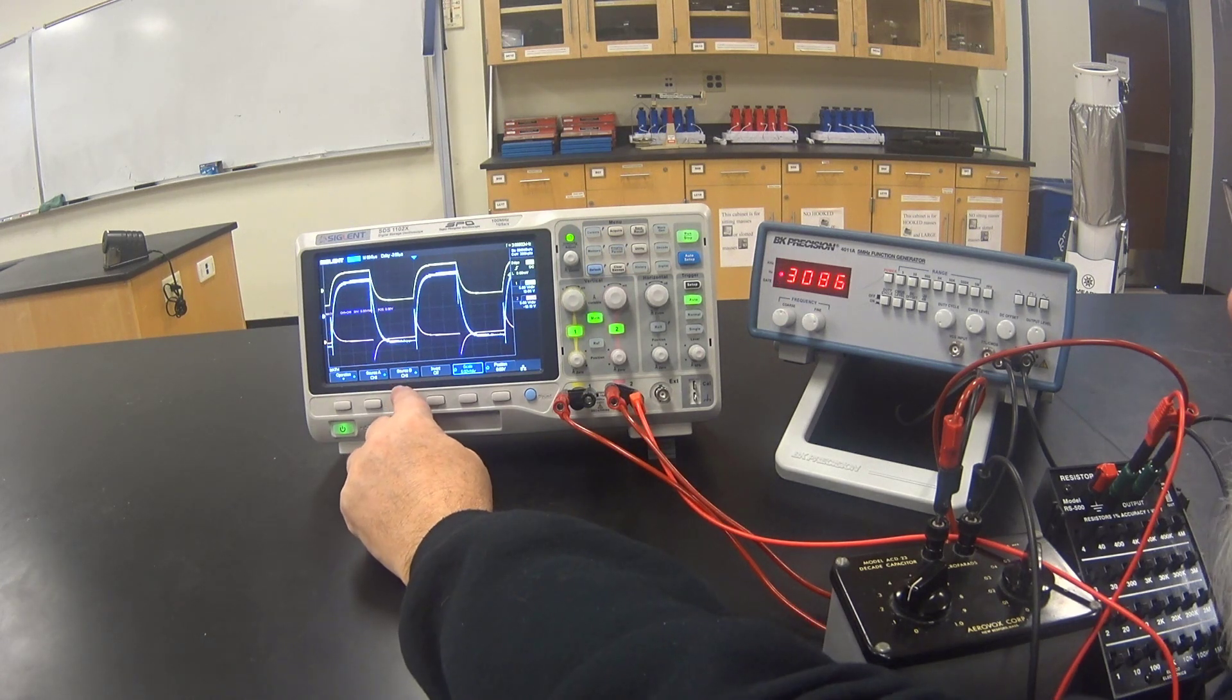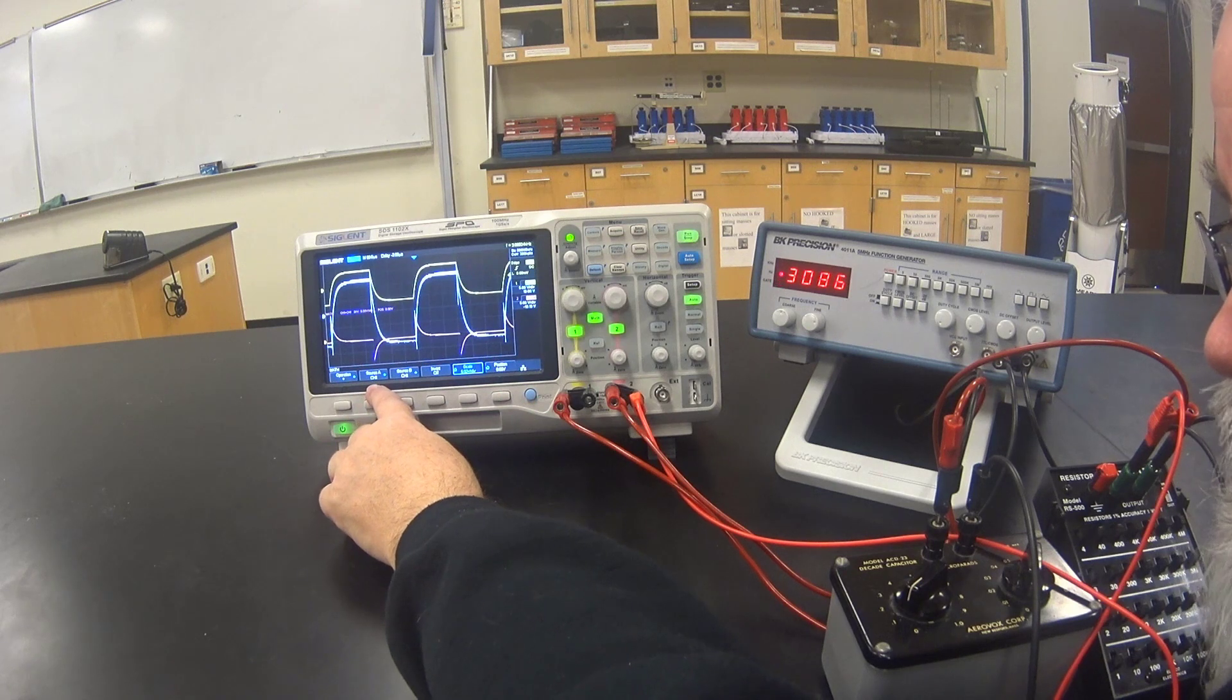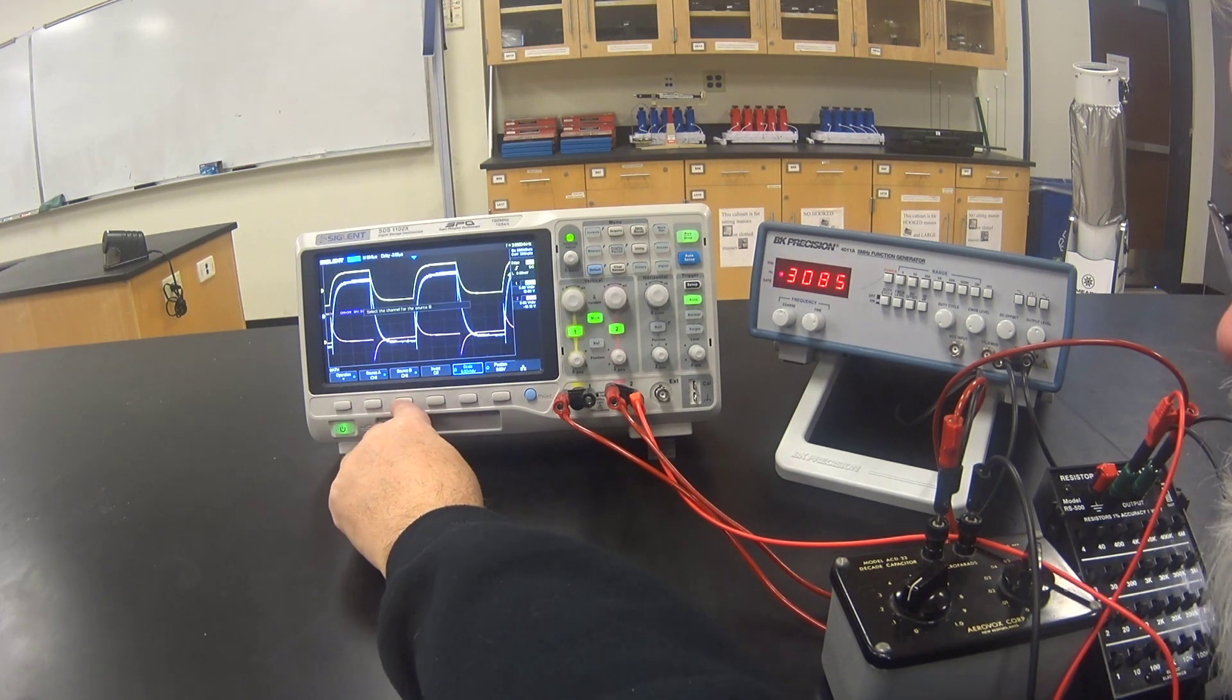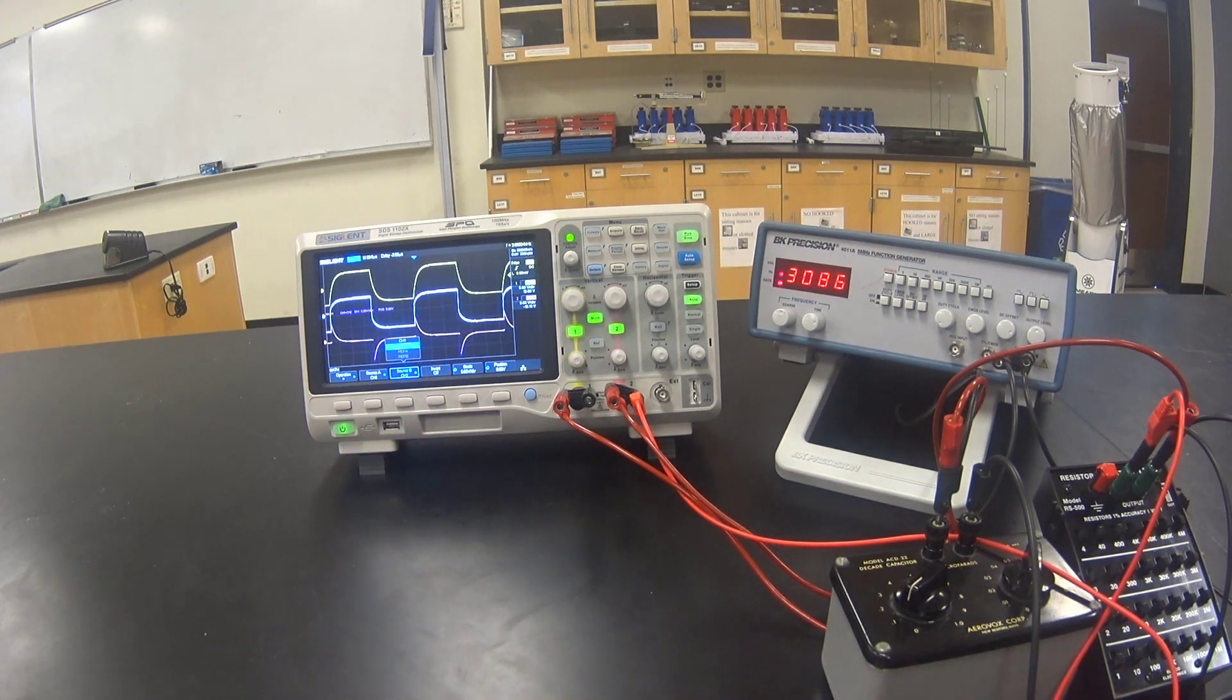By default, this machine adds channel one to channel one, and we want to add channel one to channel two. If it doesn't look exactly like a square wave, that's because there are inductances and capacitances in the oscilloscope and in the function generator that cannot be accounted for.